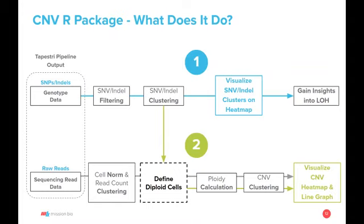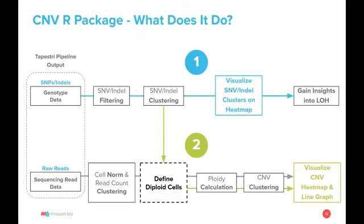We analyzed the data using our new CNV R package to detect SNVs and indels as well as measure single cell copy number profiles. On a high level, there are two steps. Step one allows you to infer LOH using the genotype data, whereas step two measures ploidy using genotype and read count data. The tool requires two main input files, both generated by the Tapestry pipeline: number one is the genotype data, and number two is your sequencing read data. The genotype data — typically the VCF file — lists all detected SNVs and indels across all identified cells. The sequencing read data lists all raw sequencing reads across all cell amplicons in your panel for each individual cell.